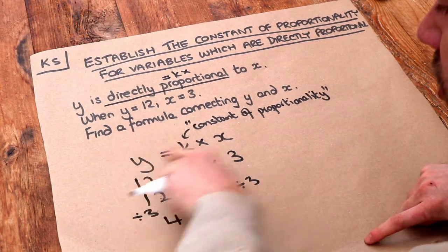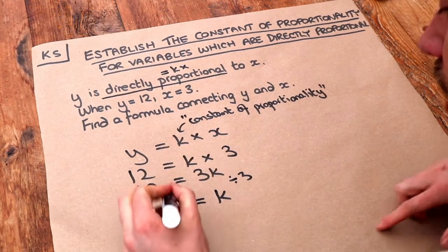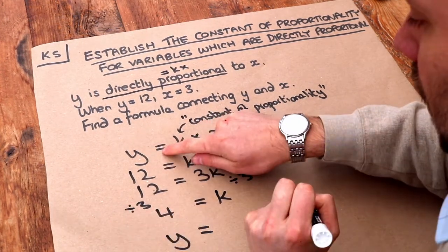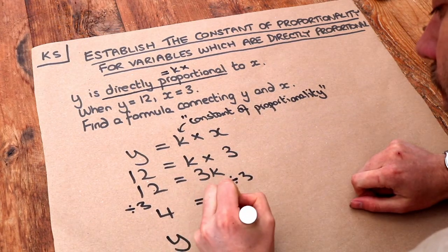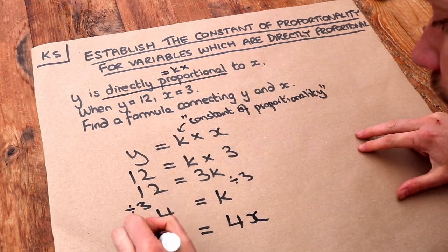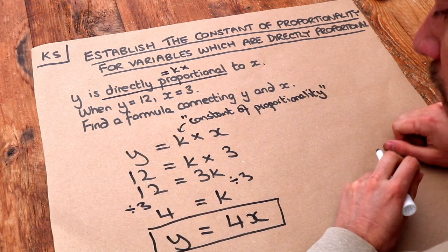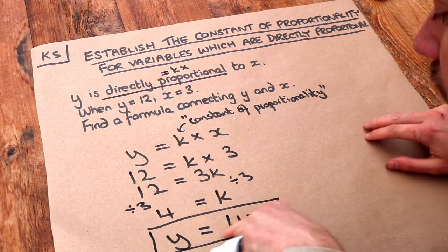Now if we write out this equation again with the k that we know, we've got y is equal to 4 times x, or just 4x. And that is the final answer. So we've now got a formula which connects y and x.